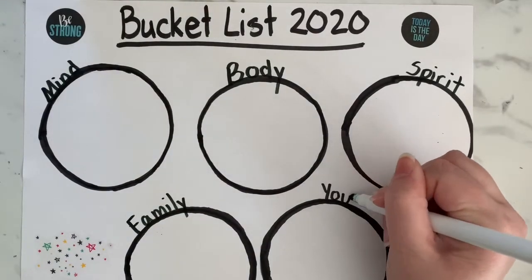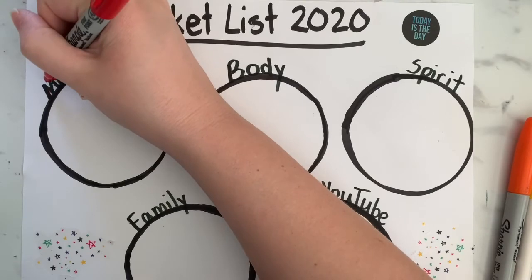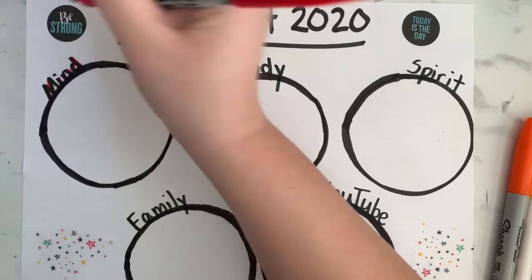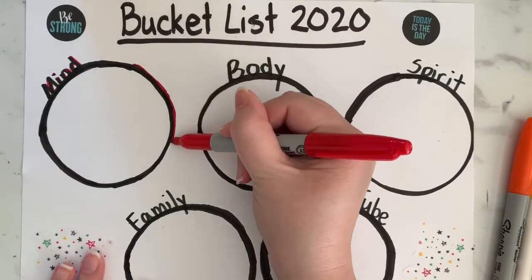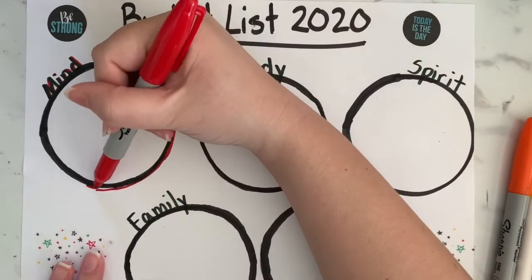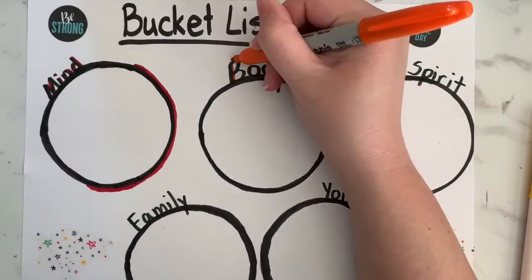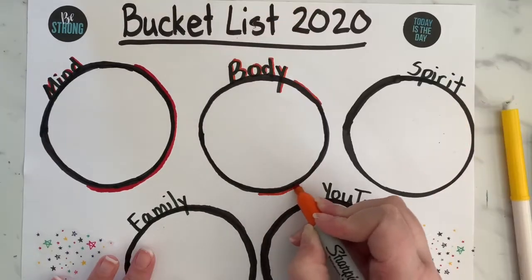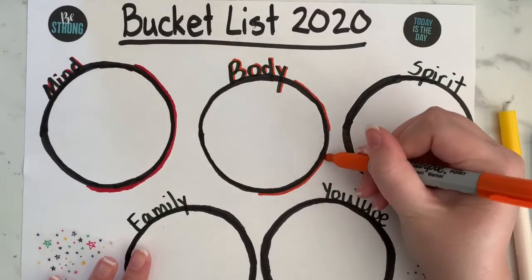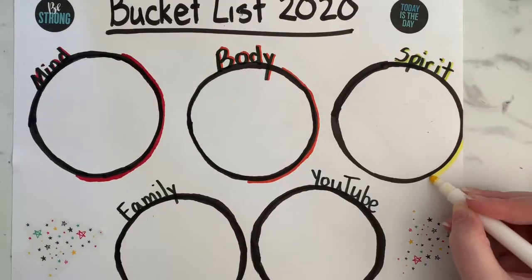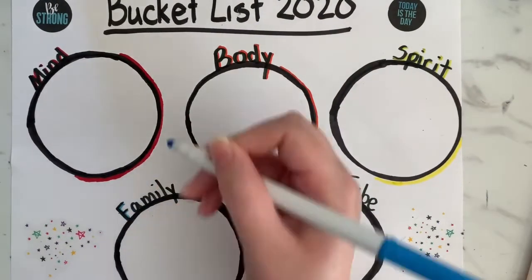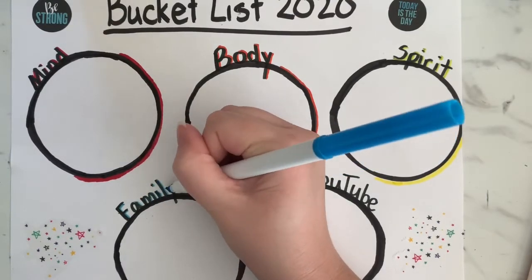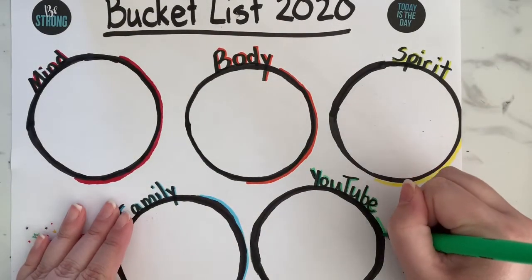Then you have family, and for me I'm going to do a circle for YouTube — you probably wouldn't do that circle because you don't have a YouTube channel. You can just put in whatever you want for a fifth circle. Then I went back in and traced just the right side of each letter and the right side of my circles with a fun color to make it look more colorful. For each category I decided to put three items.